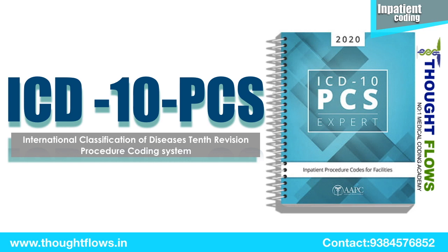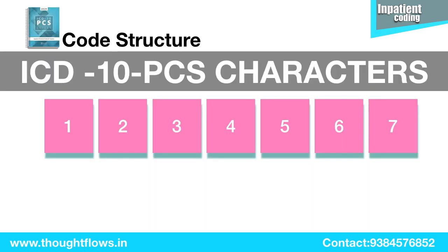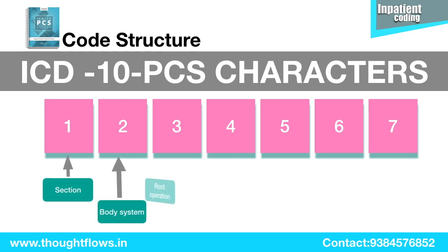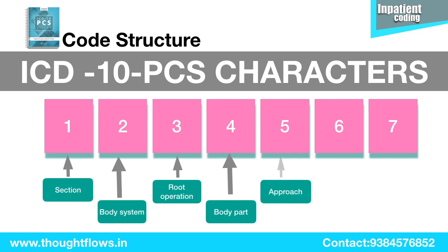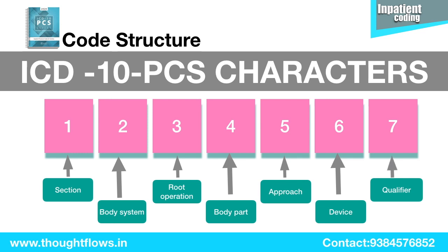If you really want to learn IP coding, first of all you need to know how the codes are classified in the PCS book. In the PCS book, the complete code has 7 characters, whereas in the CPT book we have only 5 characters. The first character is Section, second is Body System, third is Root Operation, fourth is Body Part, fifth is Approach, sixth is Device, and the seventh character is Qualifier.